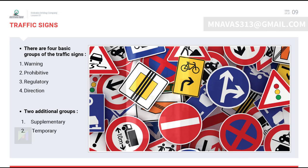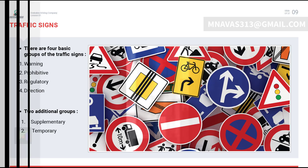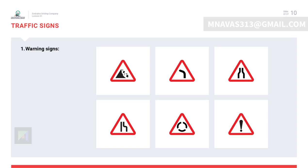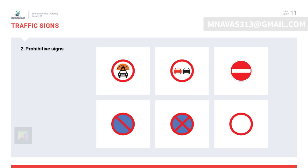Traffic signs convey information from the traffic authority to the drivers. When a warning triangle shape is seen and the color is red and white, it warns you about danger ahead. If the traffic sign is circular in shape and the color is red, it stands for prohibition and restriction.